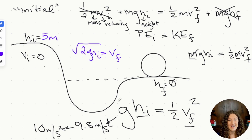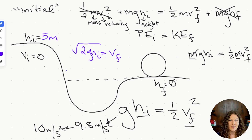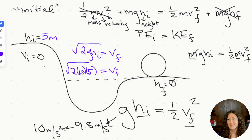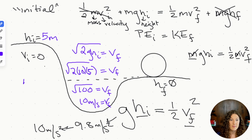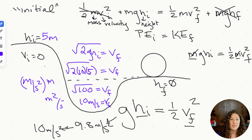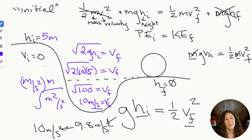Rearranging to solve for final velocity: square root of (2 × 10 × 5) = square root of 100 = 10 meters per second. We can verify units: gravity is m/s² and height is m, giving m²/s² under the square root, which yields m/s — our velocity unit. The equation is set up correctly.